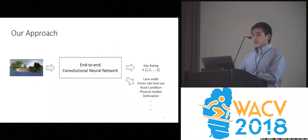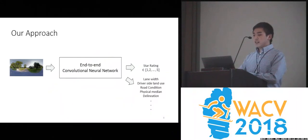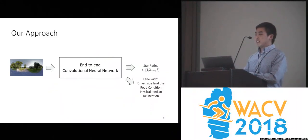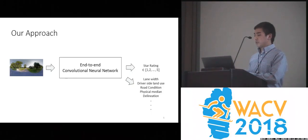Our approach to this problem is to replace the middle with an end-to-end convolutional neural network such that we can go directly from a panoramic image to the star rating, along with various road-level attributes.